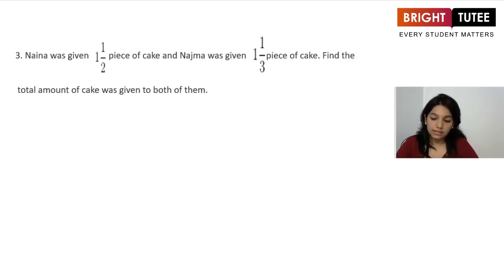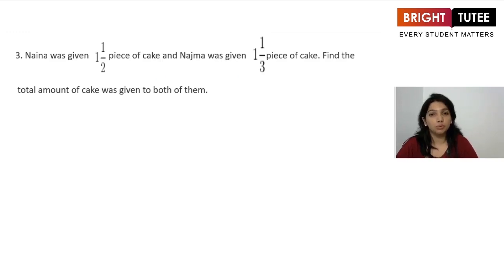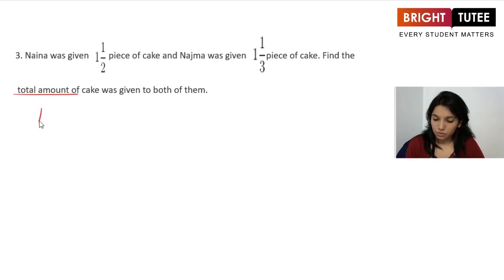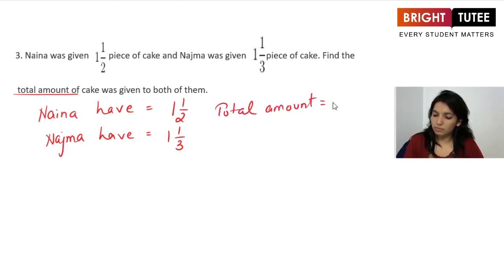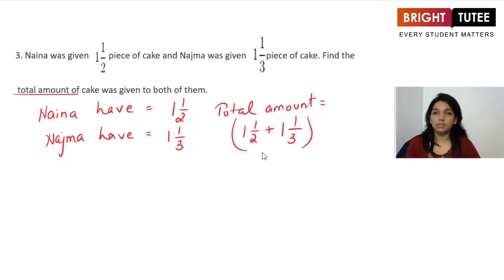Moving ahead, this question says that Naina was given 1 and 1/2 pieces of cake and Najma was given 1 and 1/3 pieces of cake. Find the total amount of cake that was given to both of them. We need to find the total amount, which means addition. The total amount will be 1 and 1/2 plus 1 and 1/3.